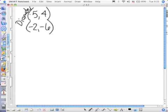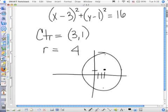Now, what if I said I want you to write the equation of the circle that has a diameter that starts at (5, 4) and stops at (-2, -6)? What do we need to write the equation of the circle? The center and the radius, right?